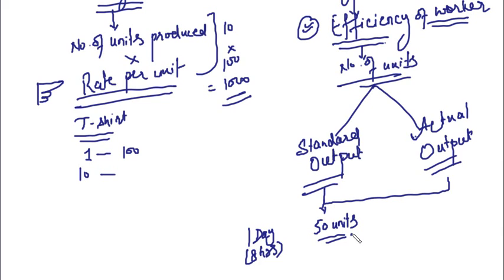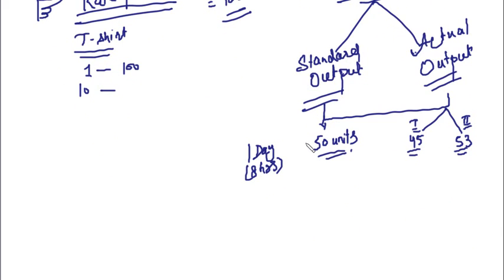For example, the standard output is set at 50 units in an 8-hour workday. In case 1, a worker produced 45 units that day. In case 2, the same worker produced 53 units on another day. So tell me — can you judge the efficiency in each case? Yes, you can do it exactly.